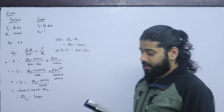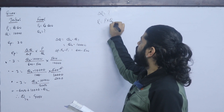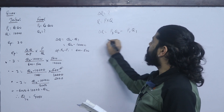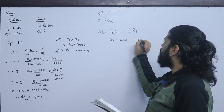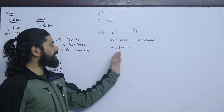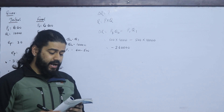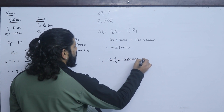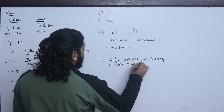Solving the equation gives Q2 = 8,000 units. The total revenue calculations: P1 × Q1 = 500 × 10,000 = 50,00,000 and P2 × Q2 = 600 × 4,000 — wait — resulting in a change in total revenue of minus 2,60,000. Since ΔR = −2,60,000, the increase in price is not a good decision.